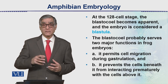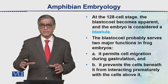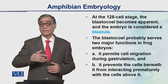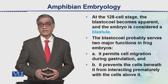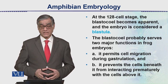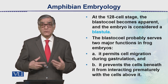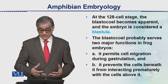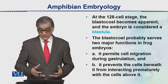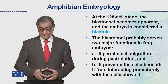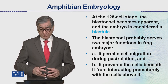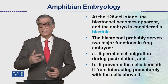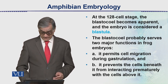The gastrula and blastula appear to have no different shape externally, but when cut open we can see the internal cavity. The blastocoel acts as a barrier that prevents the cells beneath it from interacting prematurely with the cells above it — this cavity is very important.